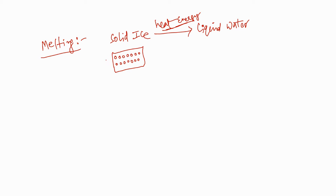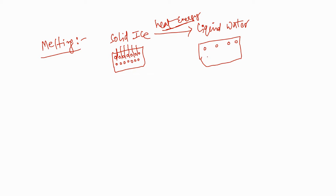In the ice, attraction forces are present between the particles. These attraction forces are going to break, and in the process the particles move away from each other. As a result, the solid ice becomes liquid water, and the particle arrangement in liquid water changes accordingly.